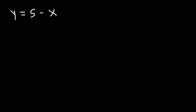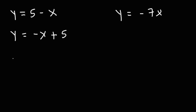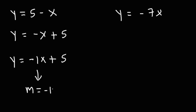Go ahead and try these two examples: y is equal to 5 minus x, and y is equal to negative 7x. For the fourth example, I'm going to reverse or switch the 5 and the negative x, so this is negative x plus 5. You might be wondering what the slope is here — we don't really have a number. If you don't see a number, assume it's always a 1. So this is negative 1x plus 5, and the slope is negative 1, the y-intercept is 5.